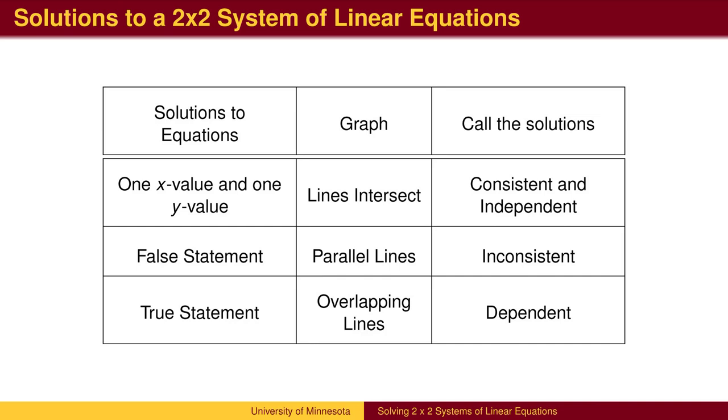To recap, if in solving the system of equations you find one x value and y value, the two lines intersected, and the system is called consistent and independent. The solution will be a single ordered pair.